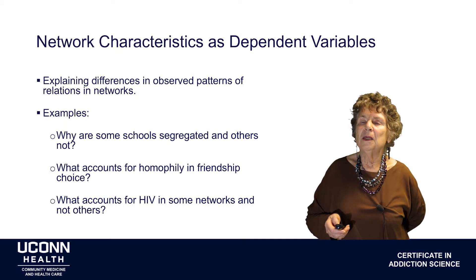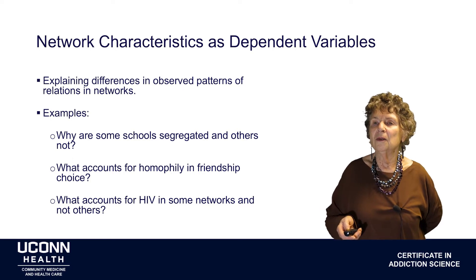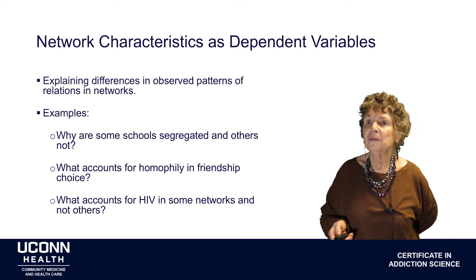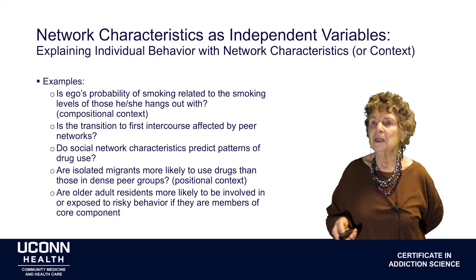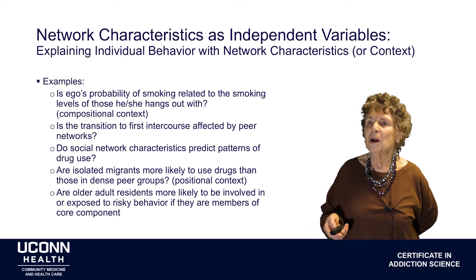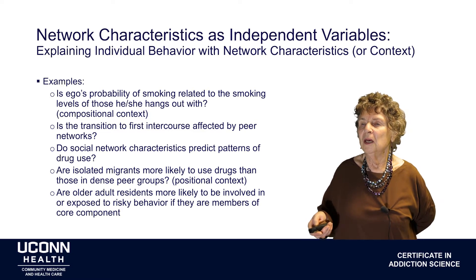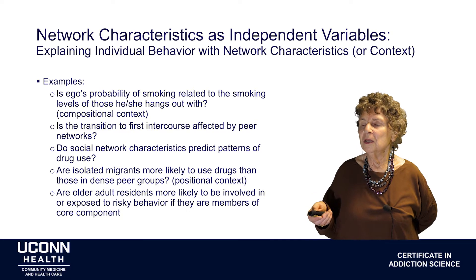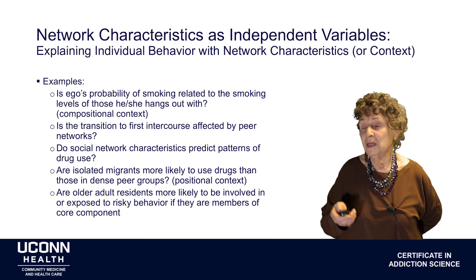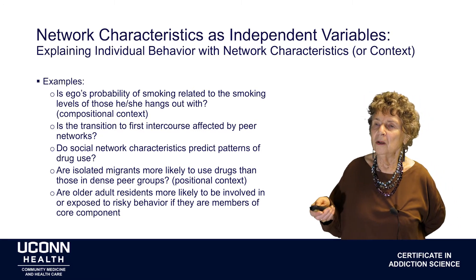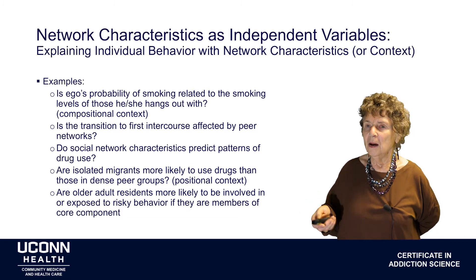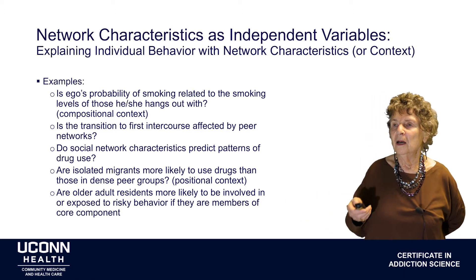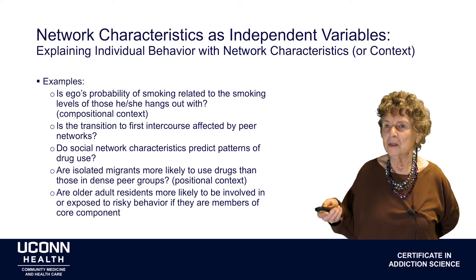Network characteristics can be dependent variables. For example: why are some schools segregated and others not? What accounts for homophily or similarity in friendship choices? And what accounts for HIV in some networks and not others? If network characteristics are predictors, we can ask: is ego's probability of smoking related to the smoking of those they hang out with? Do peer networks influence behavior? If networks are closely connected and multiplex, transition to first intercourse might occur early or simultaneously throughout that tightly knit network, whereas in a loose network people may have more opportunities for independent decisions.